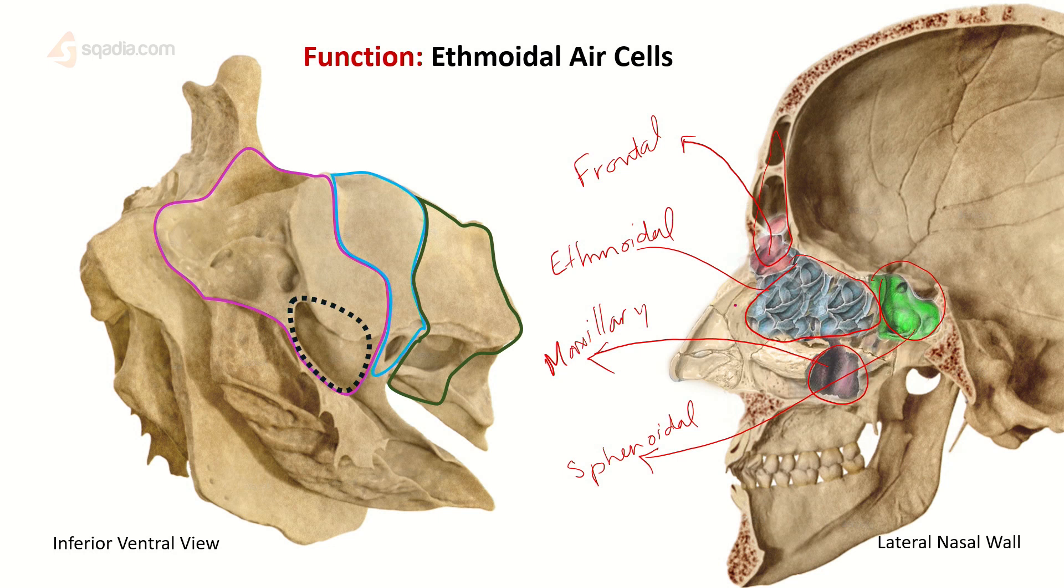Now the ethmoidal air cells, as we will learn later, are divided into three groups: the anterior air cells, the middle air cells, and the posterior air cells.